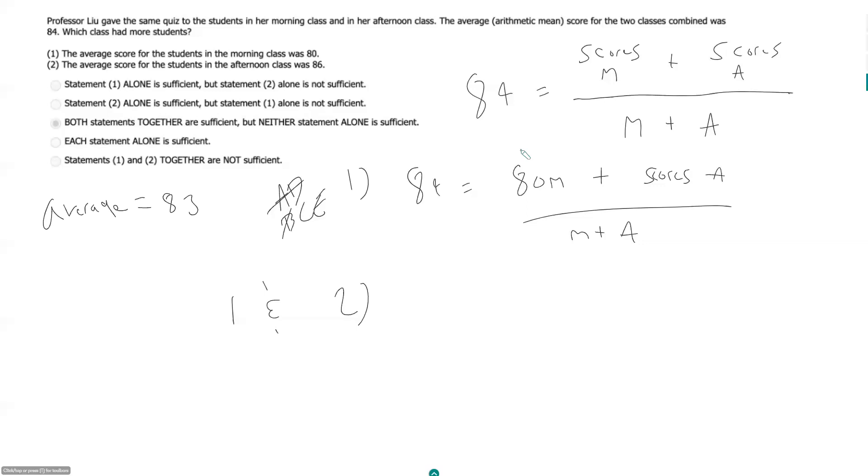Or if you want to sort of prove it on paper, you can say, okay what do I know when I'm looking at them together? So my total average for the two classes should be equal to the sum of my scores for the morning class, which is 80 times the number of students in my morning class. That's what M is. Plus 86 times the number of students in my afternoon class, which is A. So 86 times A all over M plus A.